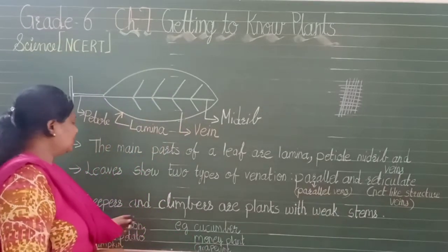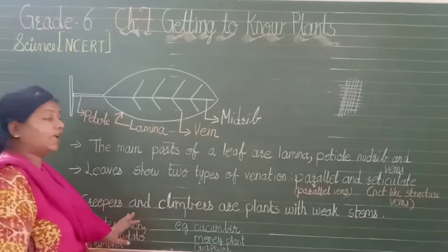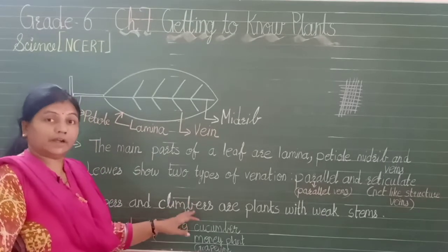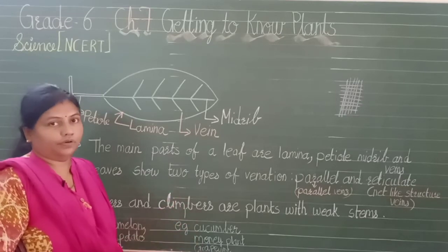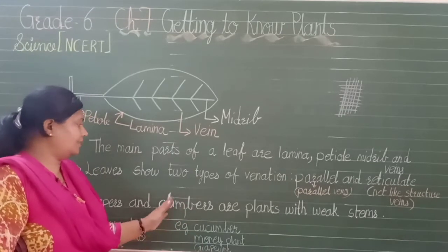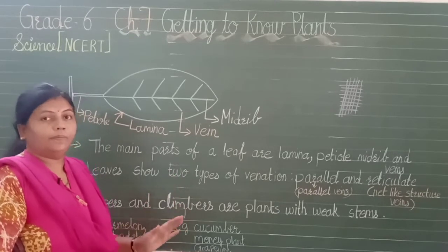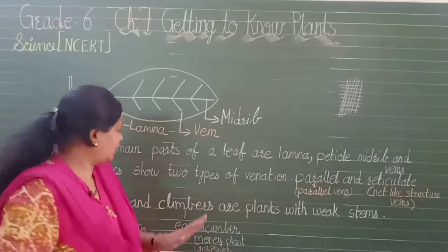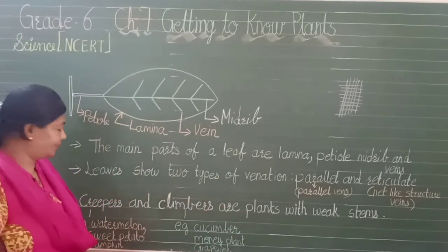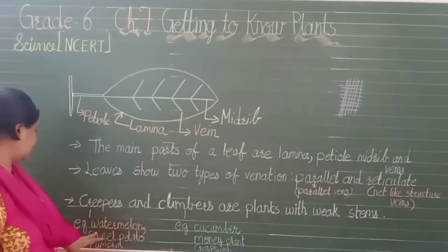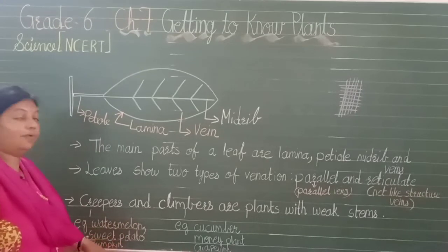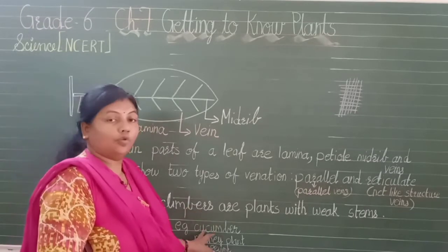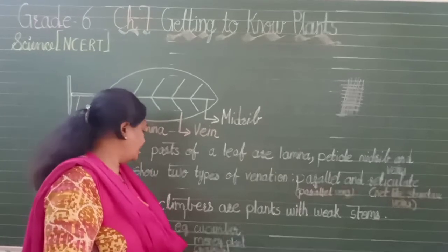Creepers are plants that always grow along the ground. Climbers are plants that climb up with the help of some support — without support, climbers cannot grow. Examples of creepers are watermelon, sweet potato and pumpkin. Examples of climbers are cucumber, money plant and grapevine.